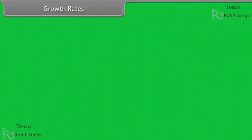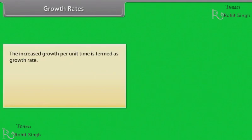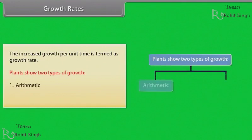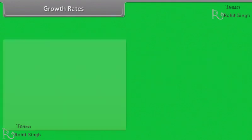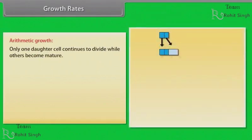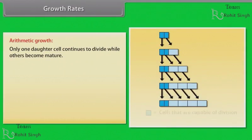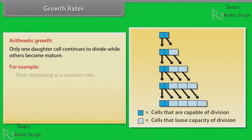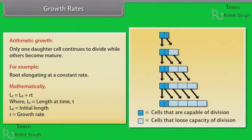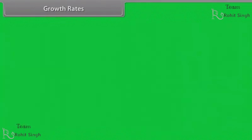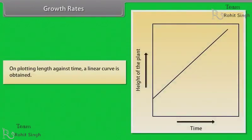The increased growth per unit time is termed as growth rate. Plants show two types of growth: arithmetic and geometric. In arithmetic growth, only one daughter cell continues to divide while others become mature — for example, root elongating at a constant rate. Mathematically, Lt = L0 + Rt, where Lt is the length at time t, L0 is the initial length, and R is the growth rate. On plotting length against time, a linear curve is obtained.